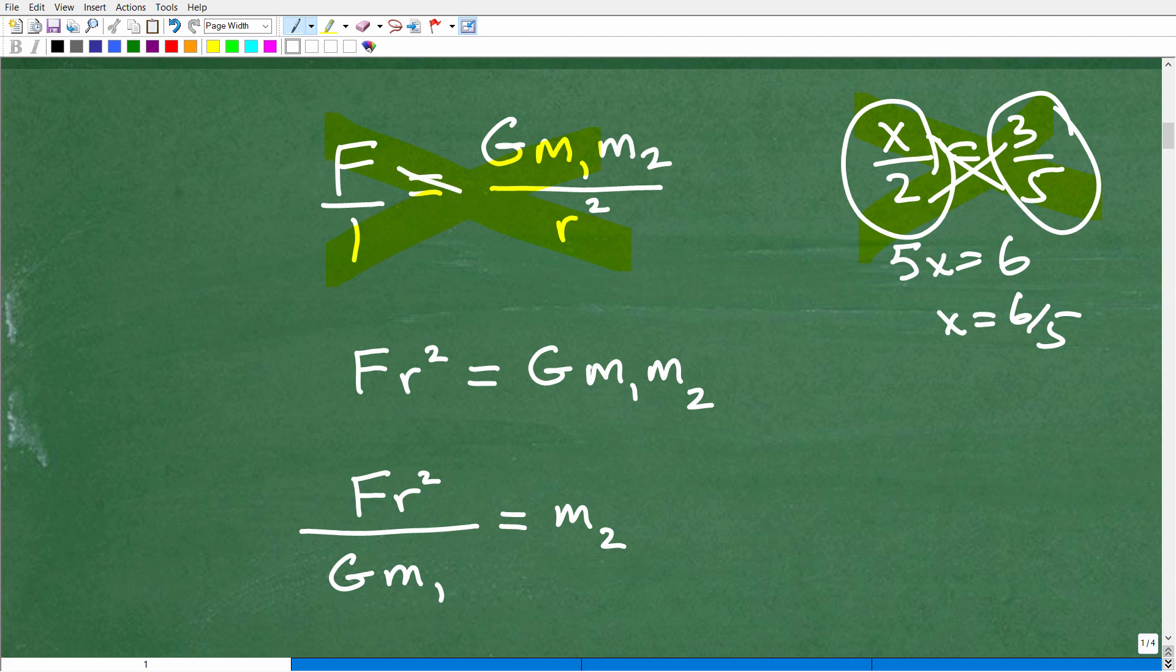So we have F times r squared. F times r squared is going to be F times r squared. And then 1 times G times m1 times m2 is this. So that's how I got that.